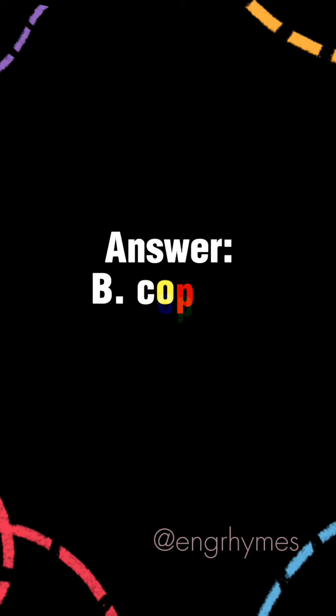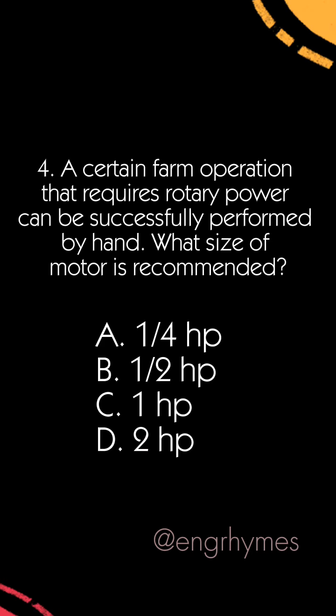Answer: B, Copper. A certain farm operation that requires rotary power can be successfully performed by hand. What size of motor is recommended? A) One-fourth horsepower, B) One-half horsepower, C) One horsepower, D) Two horsepower.